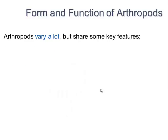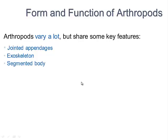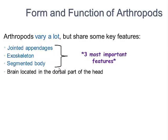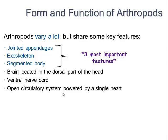For form and function, the three main unifying characteristics are jointed appendages, an exoskeleton, and a segmented body — either two or three segments. The brain is located in the dorsal part of the head, indicating cephalization. There is a ventral nerve cord running along the underbelly. They have an open circulatory system powered by a single heart, with blood pumped through arteries branching into smaller vessels that open into cavities called sinuses.